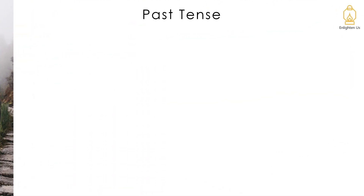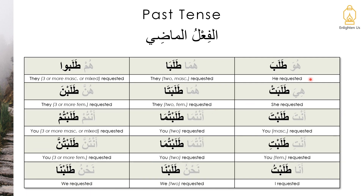Let's start with the past tense, fi'l al-maadi. Huwa talaba, huma talaba, hum talabu, hiya talabat, huma talabata, hunna talabna, anta talabta, antumaa talabtuma, antum talabtum, antii talabti, antumaa talabtuma, antunna talabtunna, ana talabtu, nahnu talabna.